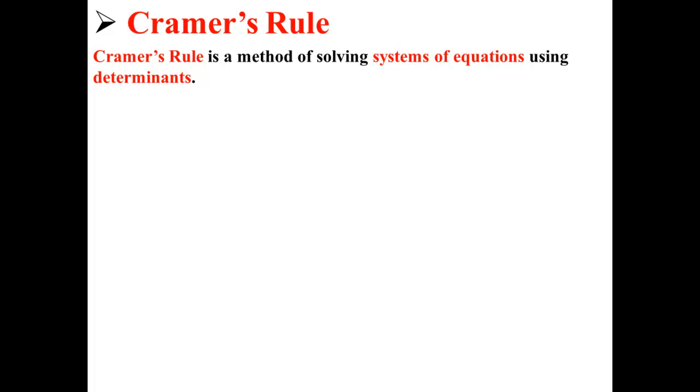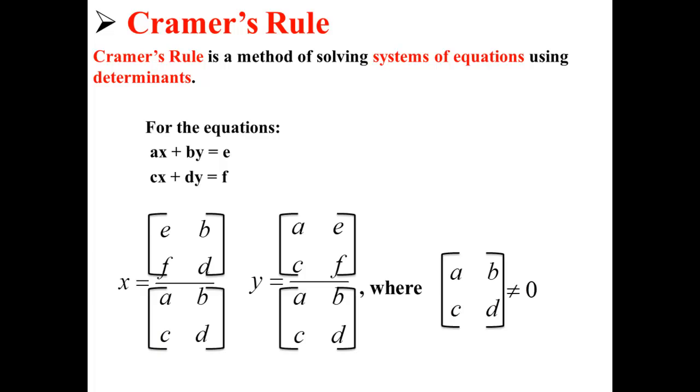Cramer's rule is a method of solving systems of equations using determinants. Let's say we have a system of equations in the following format: Ax plus By is equal to E and Cx plus Dy is equal to F.